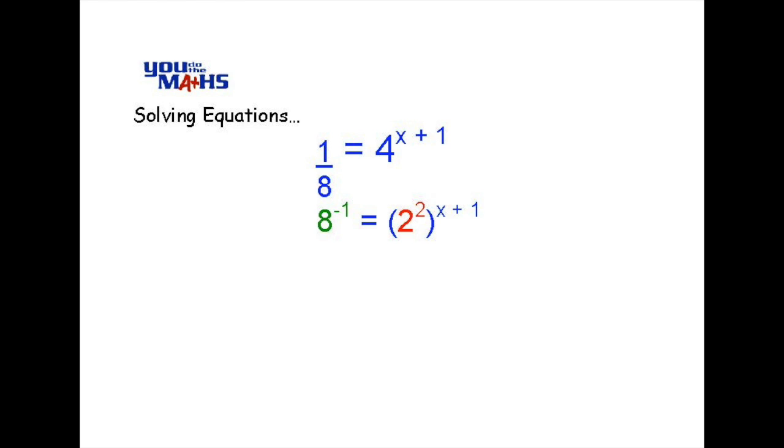So our first step will be to rewrite the 1 eighth as 8 to the negative 1. Let's raise that to the top line. We can see that 4 is equal to 2 squared. We put that in a bracket. Our next step will be to rewrite the 8 as 2 to the power of 3. And again we need to put that in a bracket. In the meantime we'll multiply out the bracket on the right hand side so we get 2x plus 2.